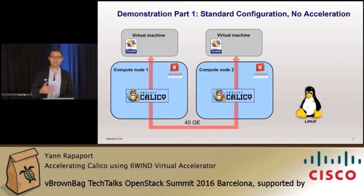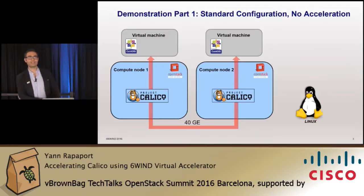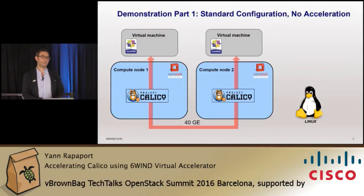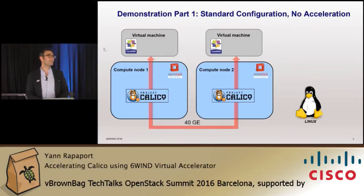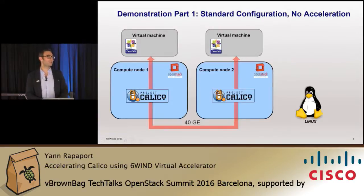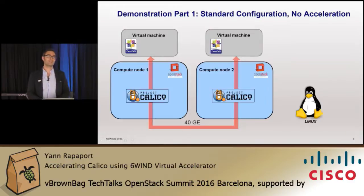We will have a demonstration in two parts. We have a system with two compute nodes. These compute nodes are running on Intel E5 2690 v3 CPUs at 2.6 gigahertz — a 12-core, 24-thread CPU.